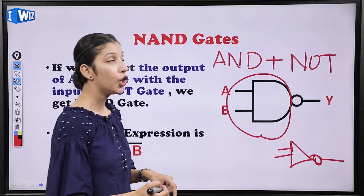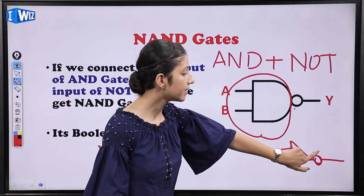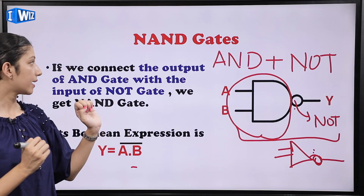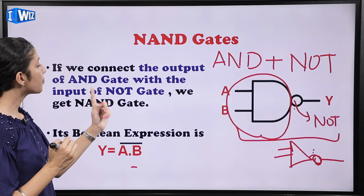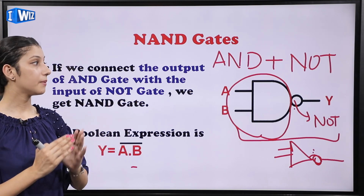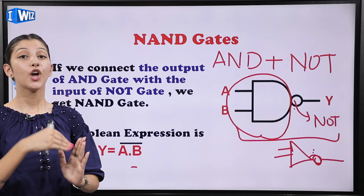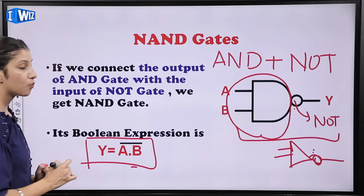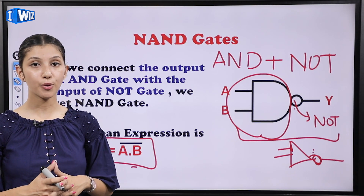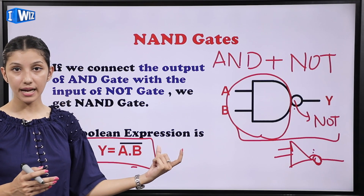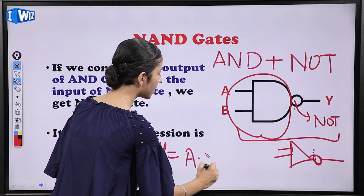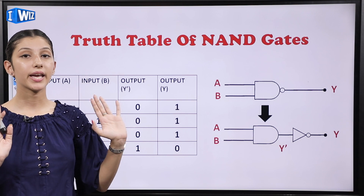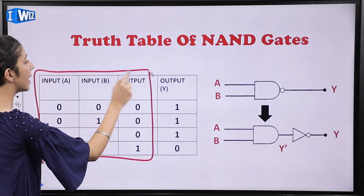Starting with NAND gate — it is a combination of AND and NOT gate. The AND gate symbol plus the NOT circle gives the NAND gate symbol. If we connect the output of AND gate with the input of NOT gate, we get NAND gate. Its boolean expression is Y = (A · B)' — that is the complement of A AND B. The truth table of AND gate is taken and its output is inverted through NOT gate.